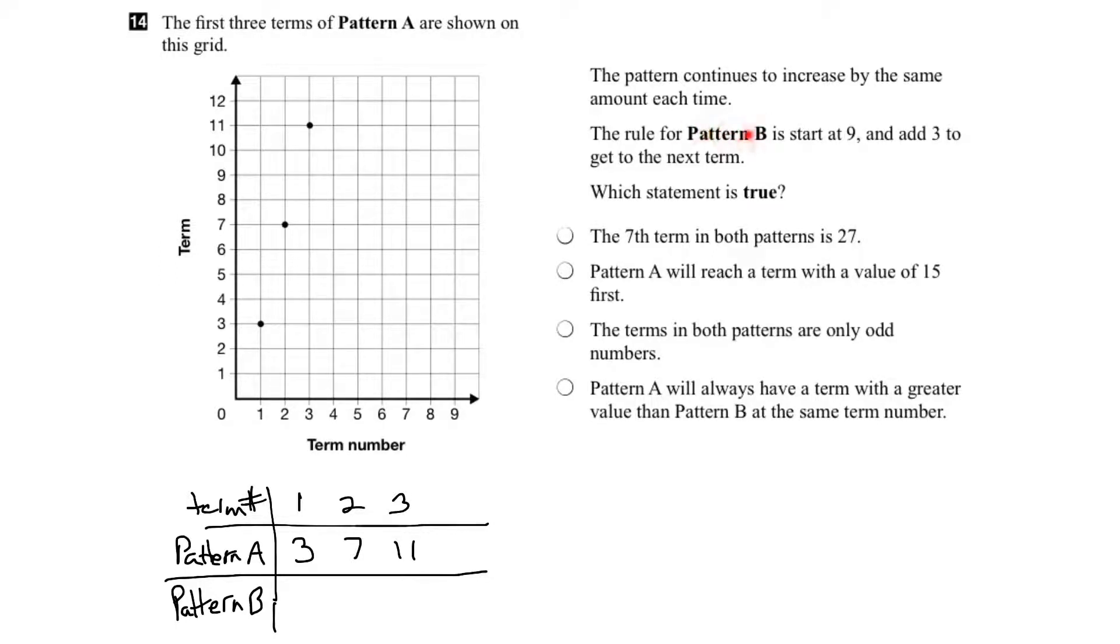Now let's look at Pattern B. It says that we start at 9 and then add 3 to get the next term. So if we start at 9, the first term would be 9. If we add 3, the second term would be 12, and the third term would be 15.